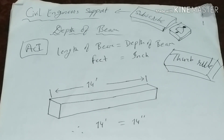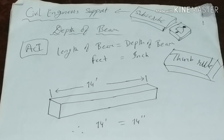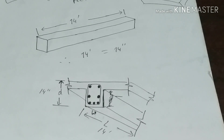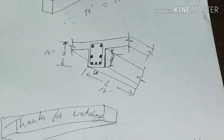We will see this here. As an example, if the beam span is 14 feet, then the depth of the beam comes out to 14 inches. This demonstrates the thumb rule in practice.